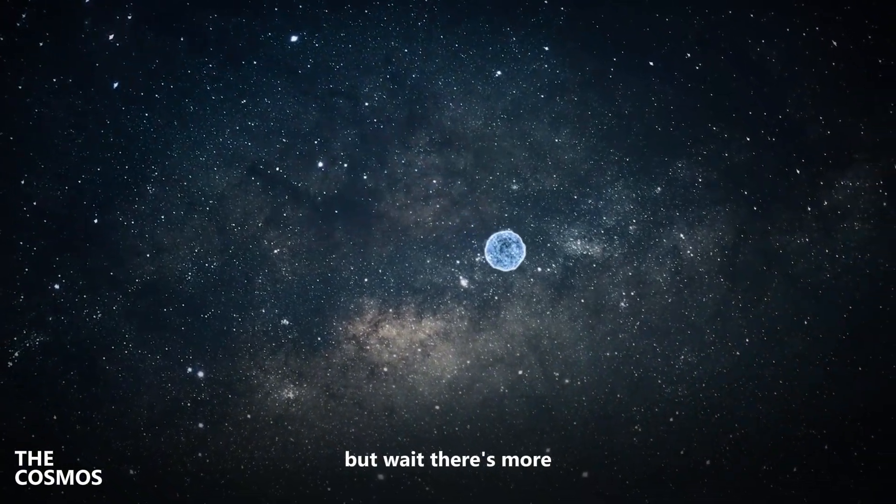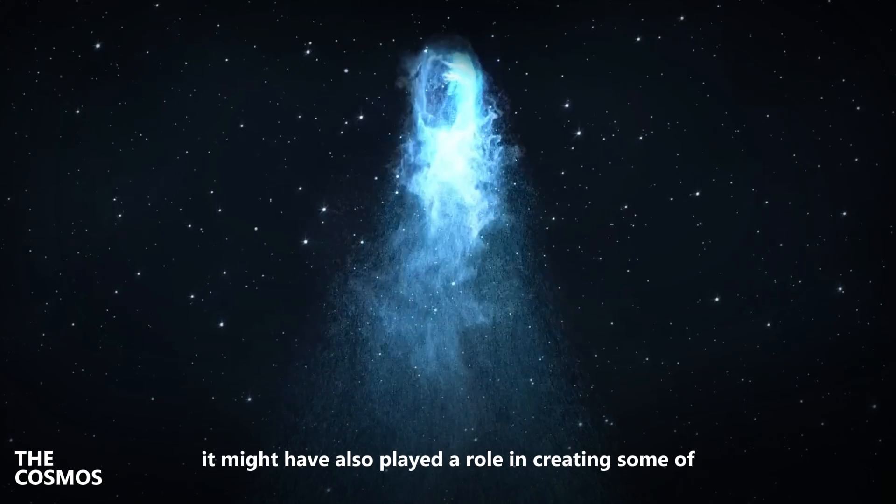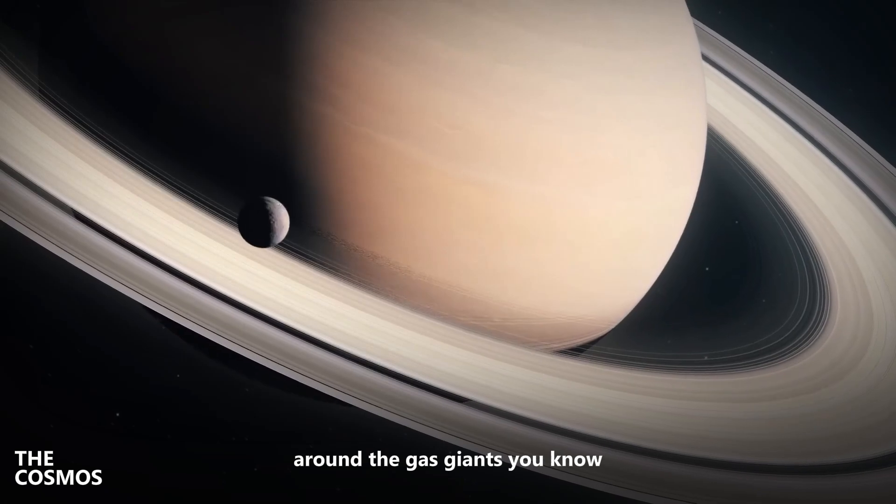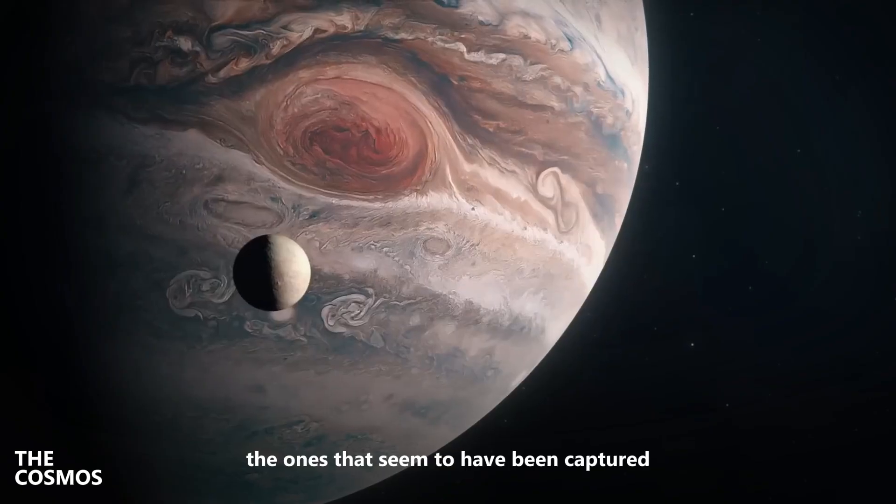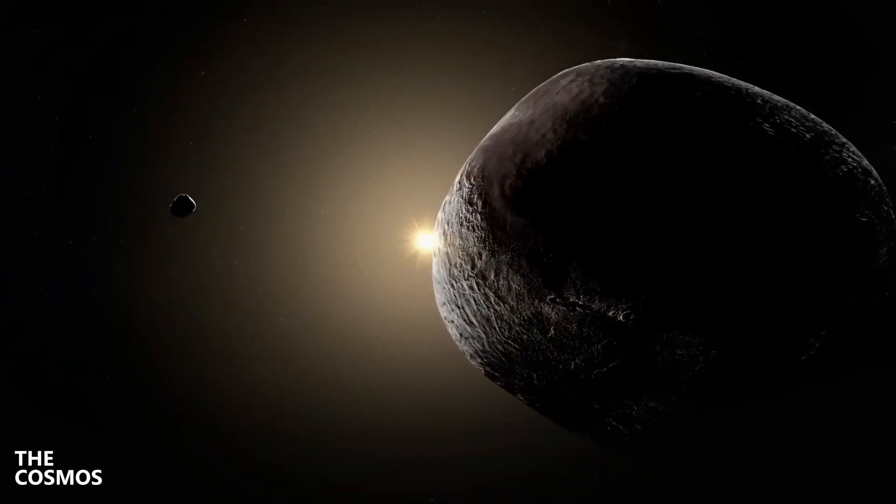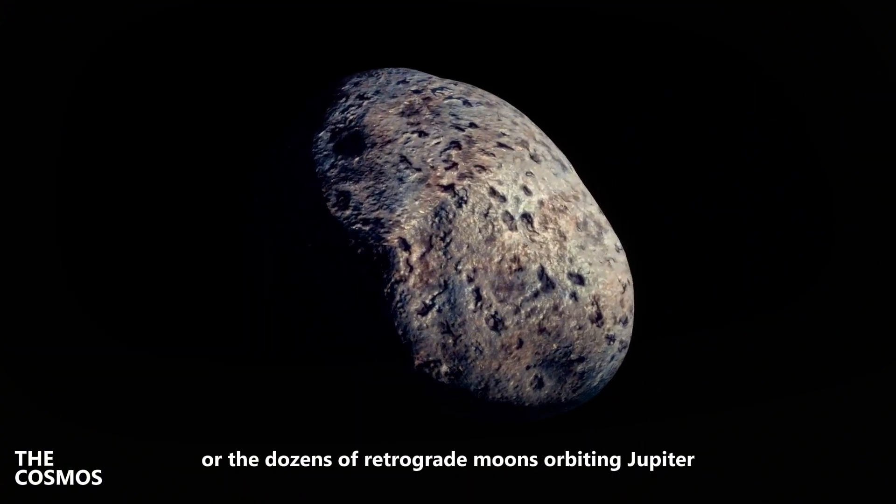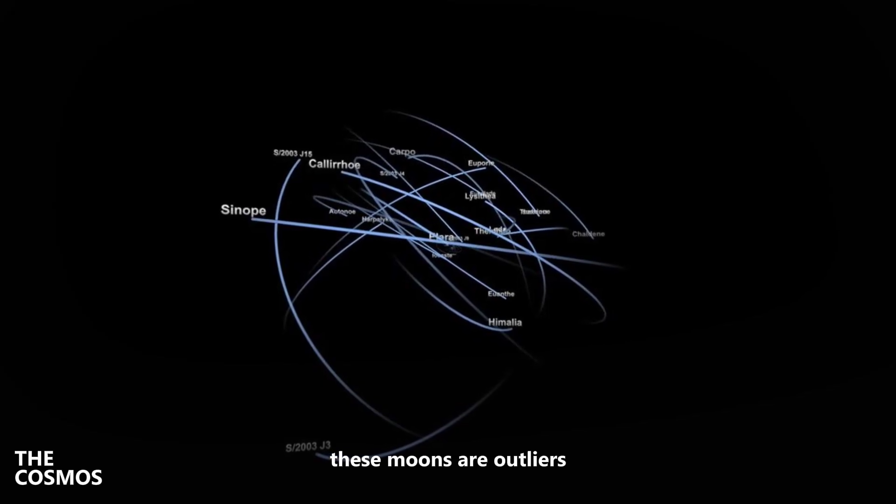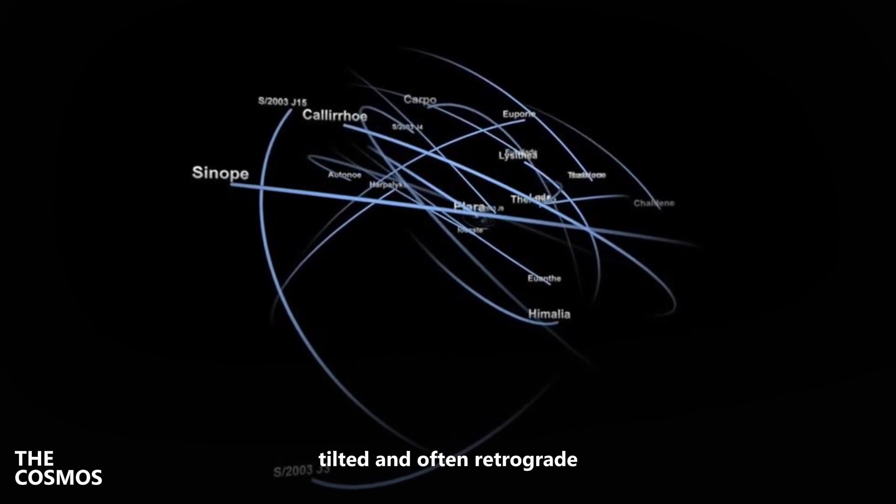But wait, there's more. This flyby didn't just mess with the TNOs. It might have also played a role in creating some of the irregular moons we see today around the gas giants. You know those odd moons that don't orbit like the others? The ones that seem to have been captured by their planets rather than forming alongside them? We're talking about moons like Saturn's Phoebe or the dozens of retrograde moons orbiting Jupiter. These moons are outliers, misfits in the moon family, with orbits that are distant, tilted, and often retrograde.